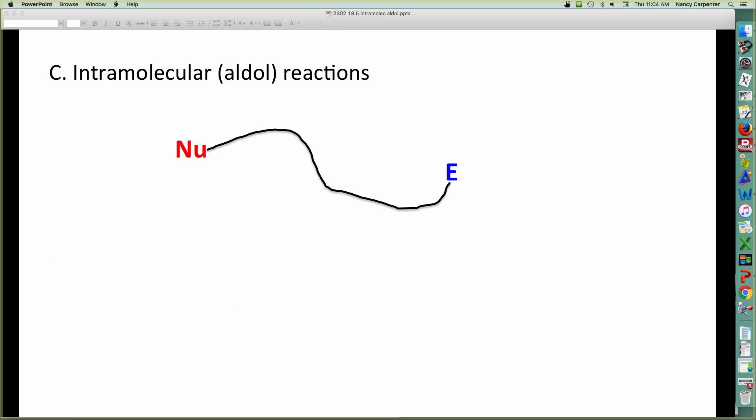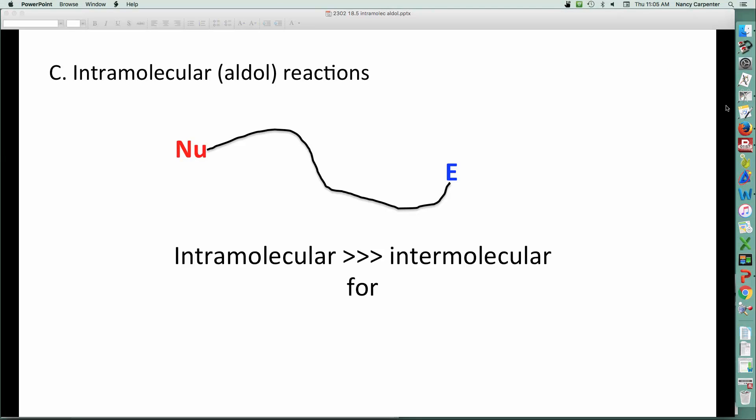What's the big deal in this chapter is that aldols are particularly good at it, especially when you're looking at making five or six-membered rings. That's the key. So whenever you have the possibility of an intramolecular reaction that can make a five or six-membered ring, boom, it is going to happen in a heartbeat.